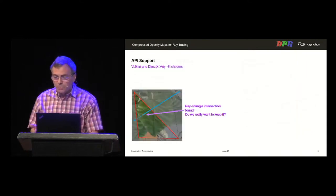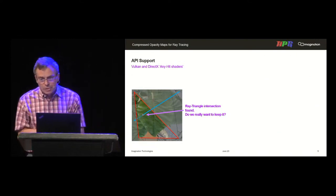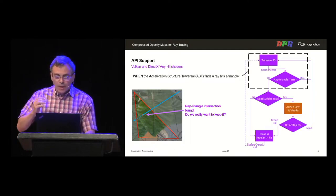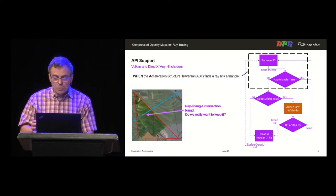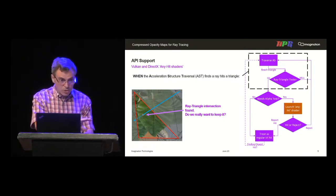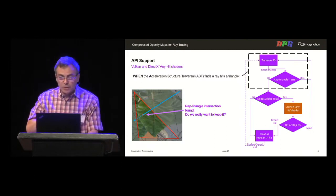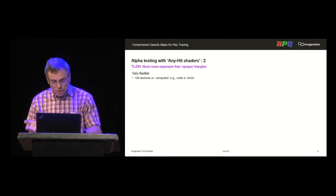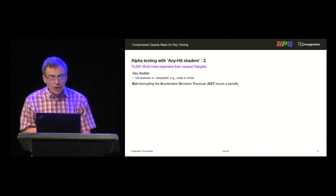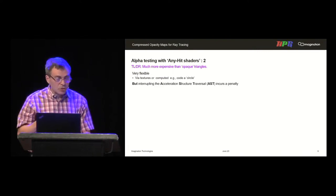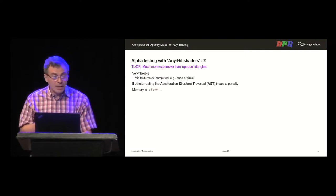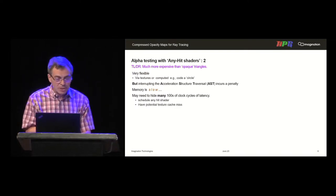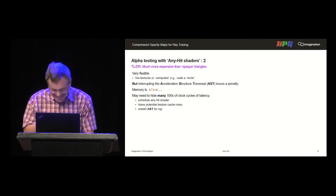The standard APIs like DXR and Vulkan RT support alpha testing via the AnyHit shader — personally I think ConfirmHit would be a better name. When a ray hits a triangle that needs to be alpha tested, it launches the AnyHit shader, which decides whether to keep the hit and proceed as if it were a solid triangle, or reject it and return to traversal. This is flexible — you can look up textures or do computation — but it is an expensive overhead. Interrupting your acceleration structure traversal incurs a penalty because memory is slow; you may need to hide many hundreds of clock cycles of latency.